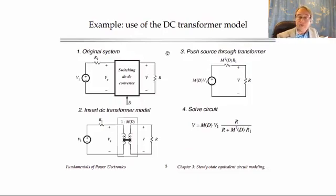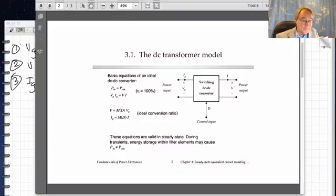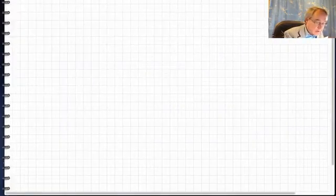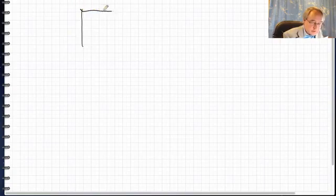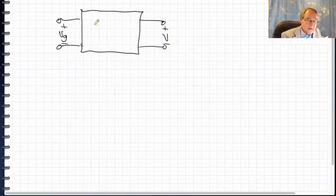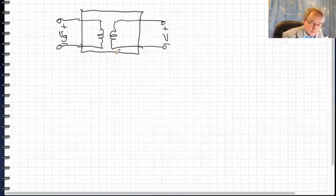Okay, let's do an example of using the transformer model. So here's an example of a circuit. In fact, let's do this on the graph paper as well. So let's suppose we have a switching converter. It has its input terminal VG and output terminal V. And we model it with a transformer.